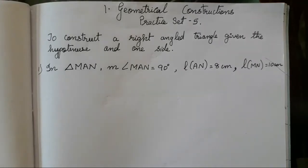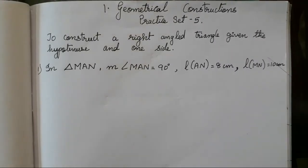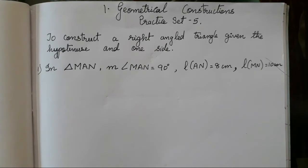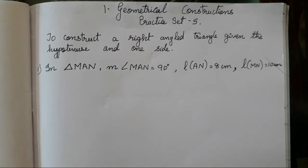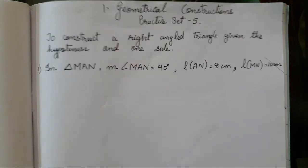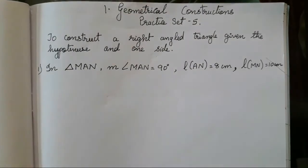Hello everyone. Today we are going to do chapter number 1, geometrical construction, practice set number 5. In today's video we are going to learn how to construct a right angle triangle when a hypotenuse and one side is given. It is to be a right angle triangle, which means a 90 degree angle.